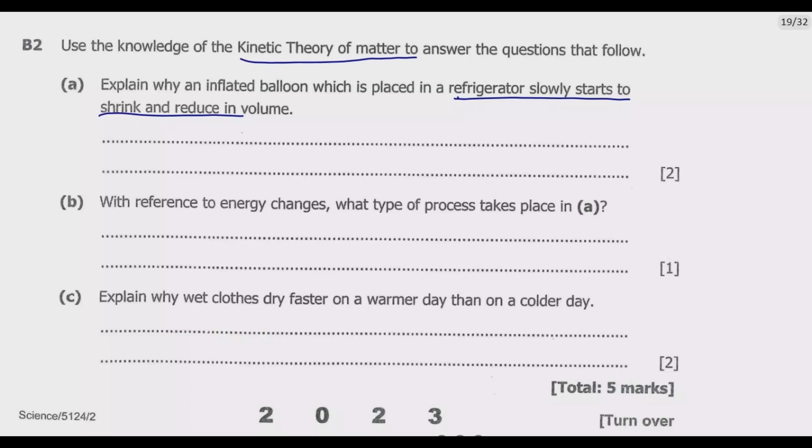So what does the kinetic theory of matter state? It states that particles of matter are always in motion and the speed of these particles depends on the temperature. So their temperature will determine the speed. If the temperature is high the speed will be high. If the temperature is low the speed will be low. So it's that principle that we need to apply.